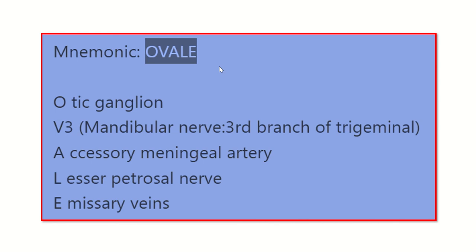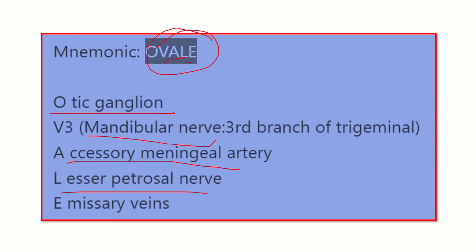The mnemonic is OVALE: O for otic ganglion, V for V3 (the mandibular nerve, third branch of the trigeminal nerve), A for accessory meningeal artery, L for lesser petrosal nerve, and E for emissary vein. This mnemonic makes it easy to remember all the contents that pass through the foramen ovale.